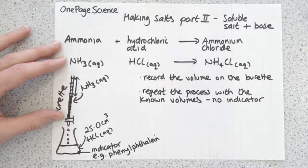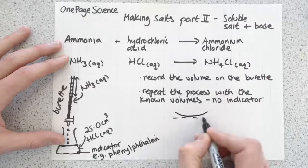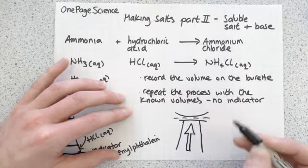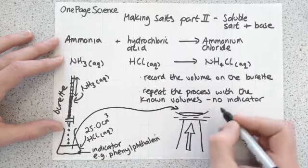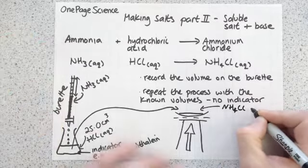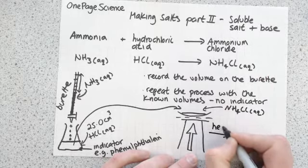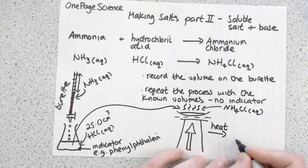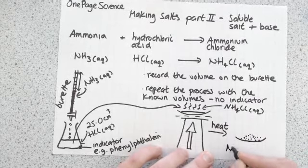You have a solution, but we want a solid sample of our salt. So just like the previous example, you use an evaporating dish, gauze, tripod, and heat. Pour the ammonium chloride solution into the evaporating dish, heat it up to evaporate off all the water, and you're left with a solid sample of ammonium chloride.